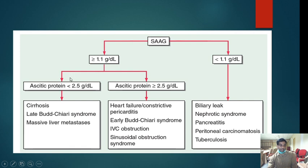For SAAG greater than 1.1, you further divide based on ascitic protein. If ascitic protein is less than 2.5, it is a transudate — cirrhosis is the most common cause, along with Budd-Chiari syndrome and massive liver metastasis. If ascitic protein is greater than 2.5, the cause is heart failure, constrictive pericarditis, early Budd-Chiari syndrome, IVC obstruction, or sinusoidal obstruction syndrome.